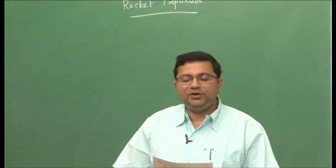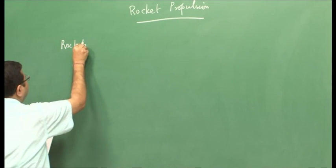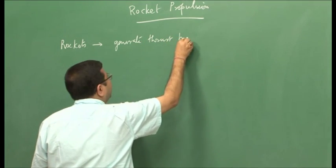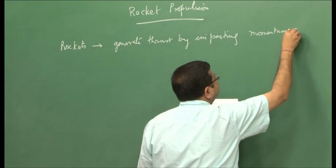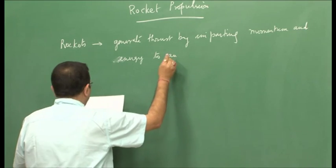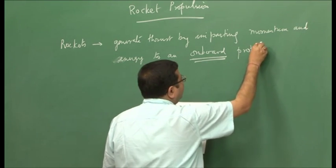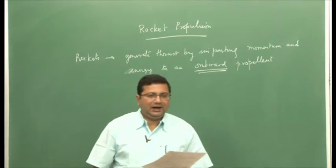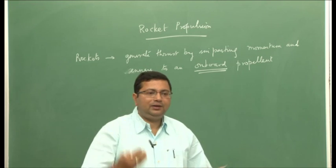In the previous class we talked about what rockets are and the basic definition of rockets. Rockets are devices which generate thrust by imparting momentum and energy to an on-board propellant. The key phrase here is 'on-board propellant.' The rocket carries that propellant and essentially energizes it or adds momentum to it. Unlike an air-breathing engine which draws most of its propellant from the surrounding environment, a rocket energizes its on-board propellant.